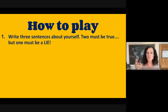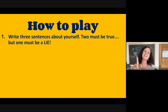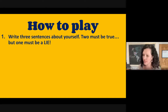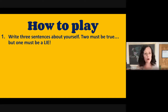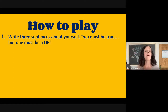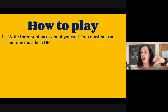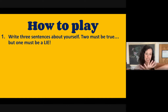First, write three sentences about yourself. Two of these sentences must be true, but one must be a lie, which means it is not true.